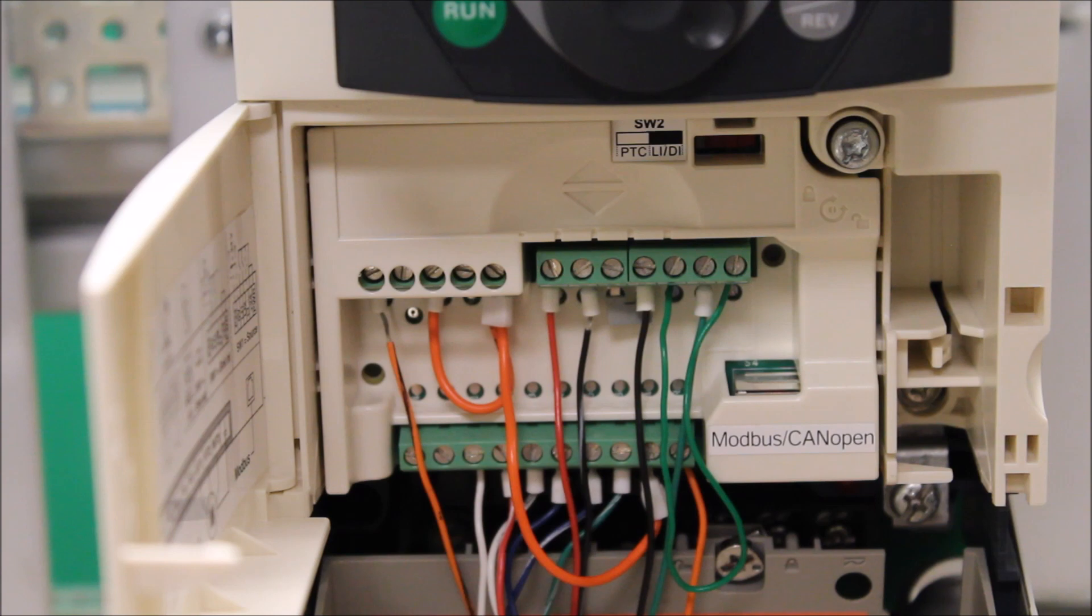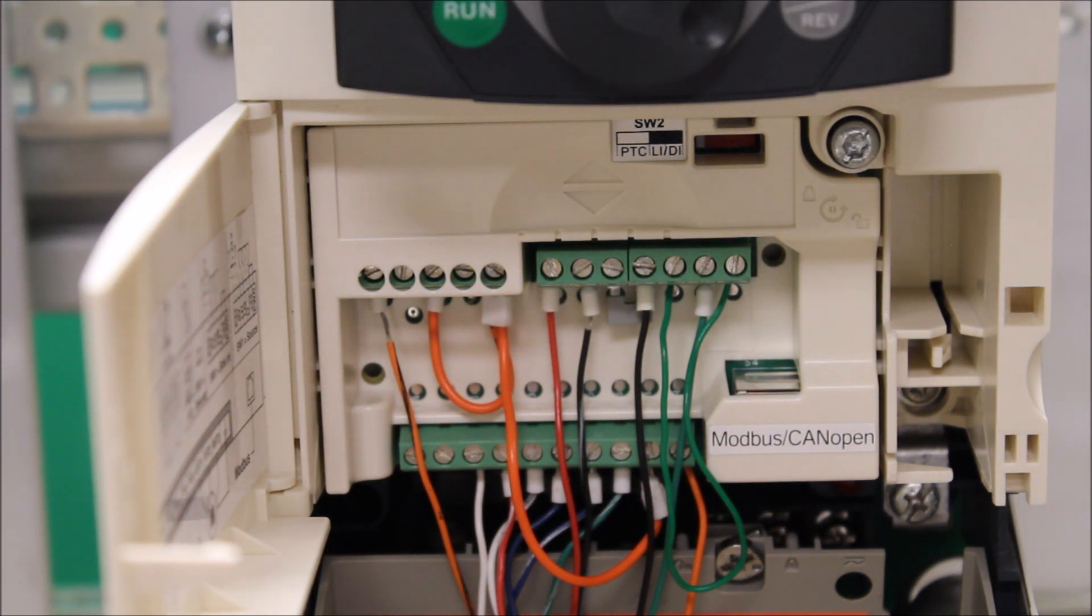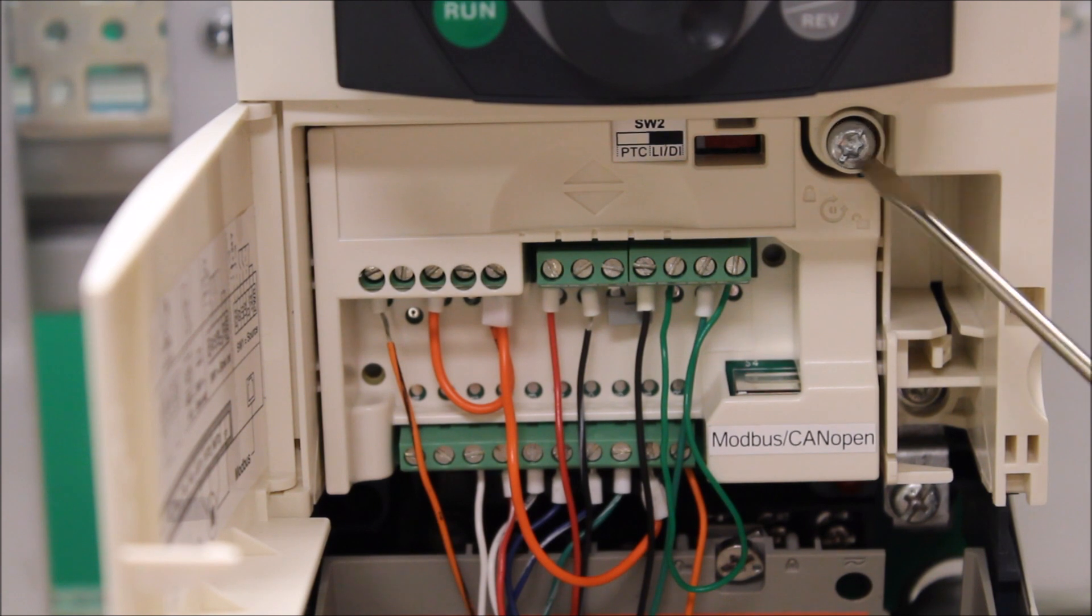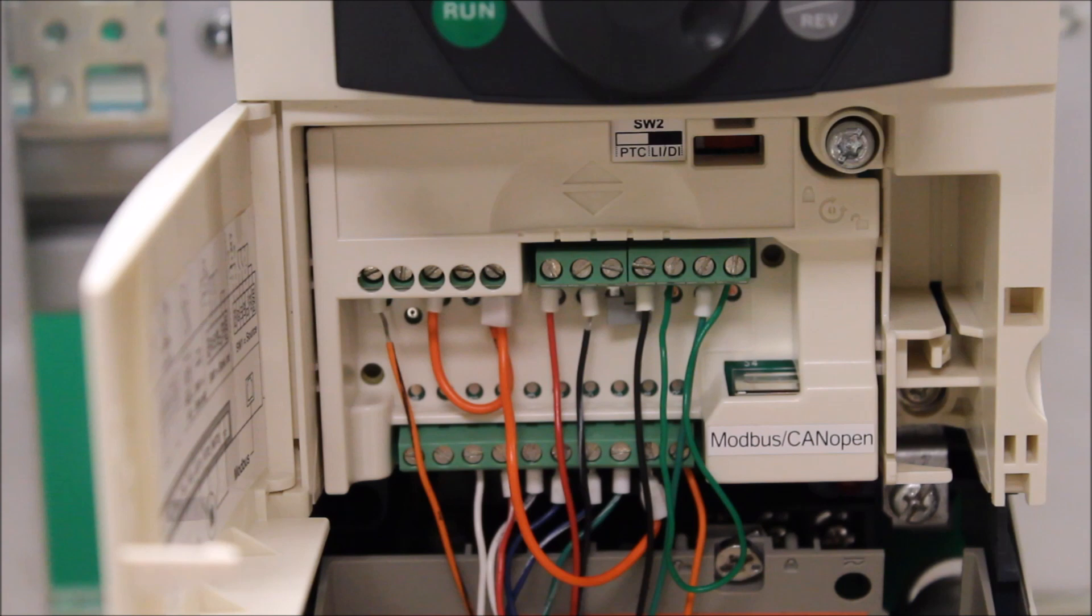So having said that, the first thing you want to do is make sure everything is powered down. To get access to the sync and source switch, you need to first unlock this screw right here so that you can pull this card down, because otherwise the sync and source is not shown here.